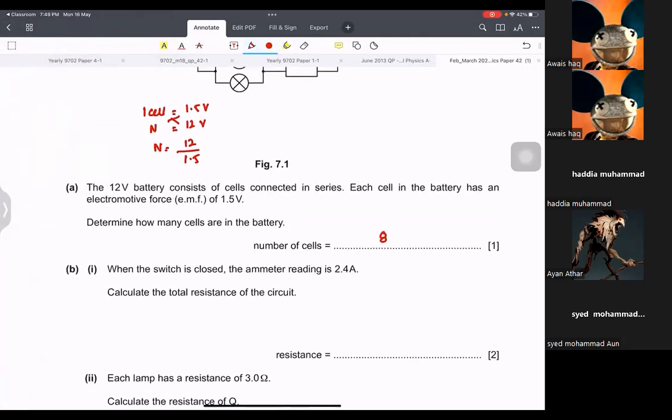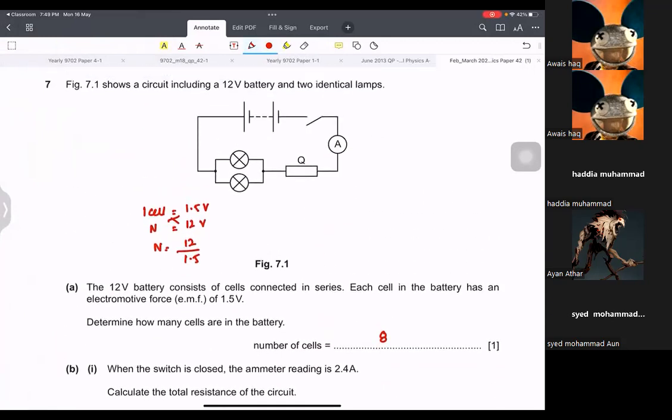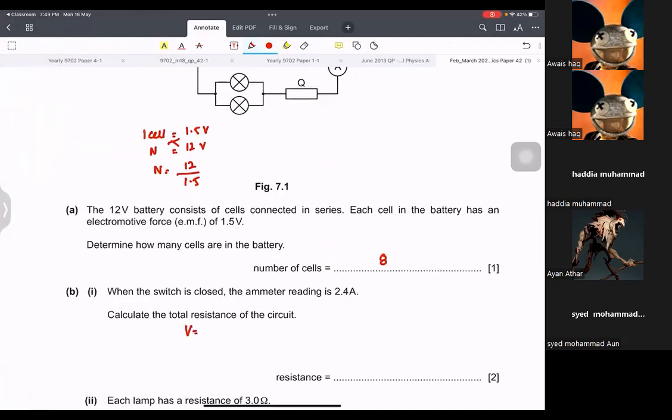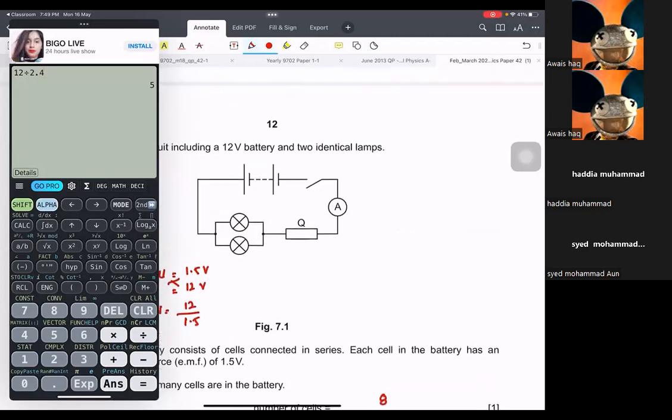When the switch is closed, the ammeter reading is 2.4. Calculate the resistance in the circuit. So we're going to use V equals to IR. Total voltage is 12. The total current is 2.4. We can find the total resistance just like that. So it is 5 ohms. Units are essential.